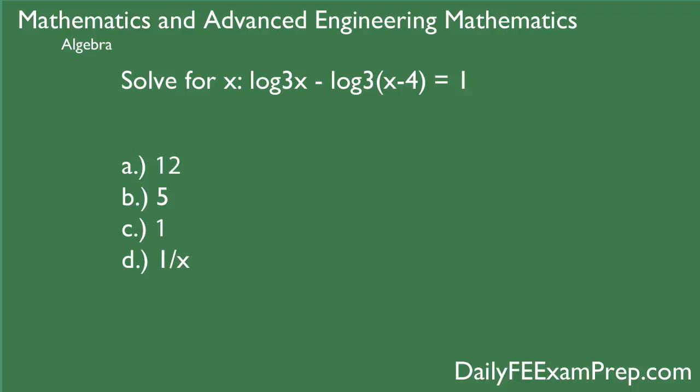So today's question is asking us to solve for x given the equation log₃(x) minus log₃(x-4) equals 1. Basically what we're going to be doing is we are going to use our logarithmic properties which can be found on page 19.